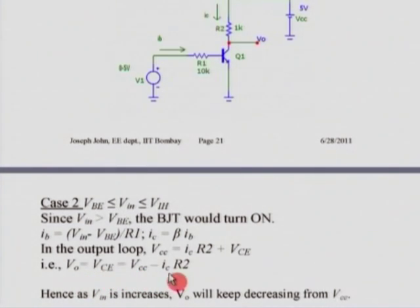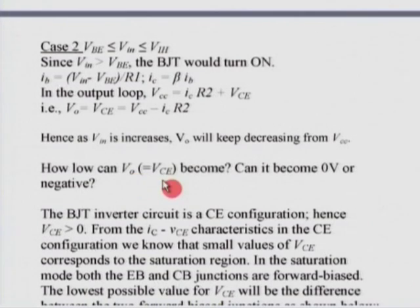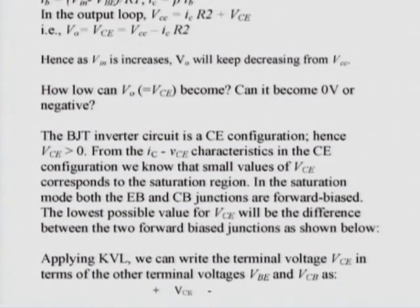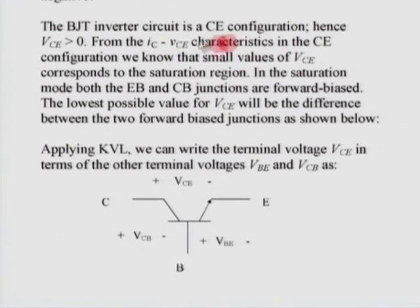The issue is how low can V_out or V_CE become? We saw from the I_C vs V_CE characteristics that V_CE cannot be negative and that there is a saturation region. The lowest value of V_CE possible for an NPN transistor is V_CE(sat), which is typically about 0.2 volts for DC calculations. From KVL, I_C(max) = (V_CC − V_CE(sat)) / R_2. This gives the maximum possible value of collector current.